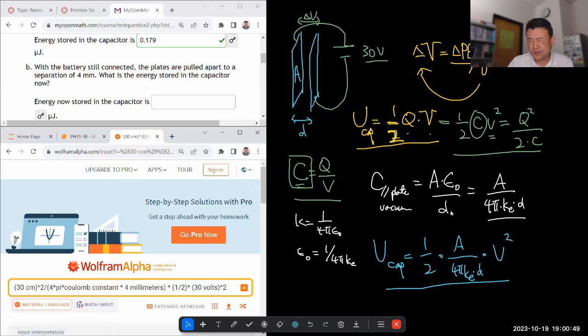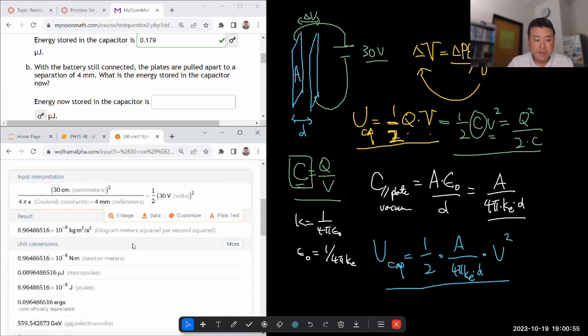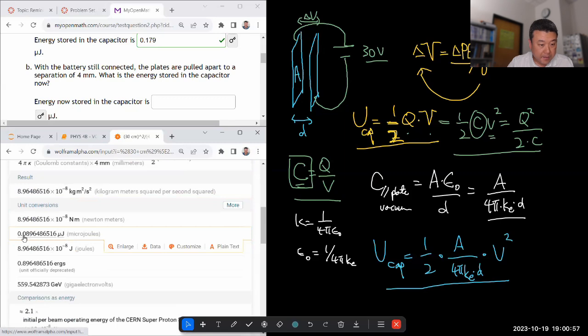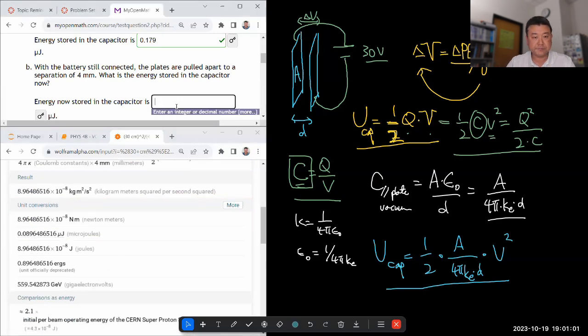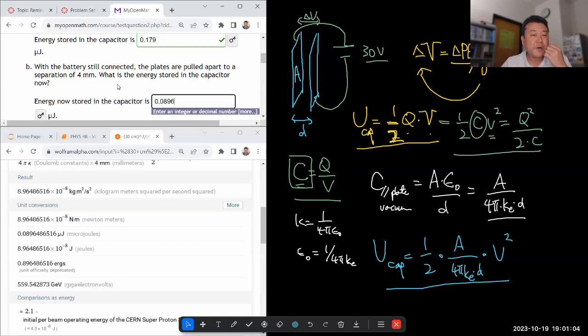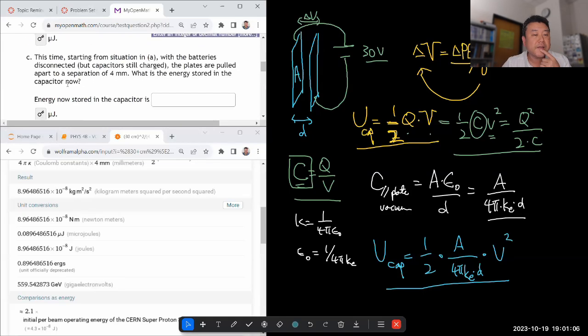And we should be able to hit enter and get the same new answer. And just thinking through, because with a larger distance, your capacitance is lower, so energy stored will be less. And yeah, 0.0896. And I hope the question makes sense of that.